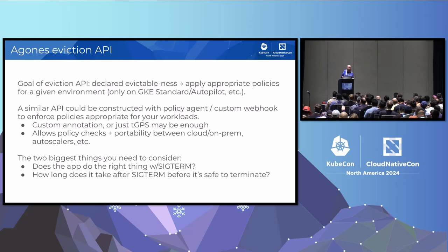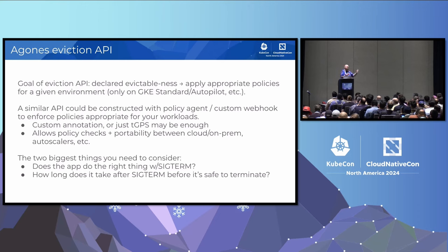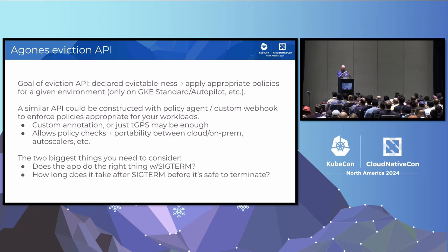If you want to do this on your own workloads, you could do something similar with a policy agent or a custom webhook to enforce policies appropriate for your workloads. If your workloads all support SIGTERM — modern or cloud-native apps that know SIGTERM means clean up now — you could use the termination grace period seconds as an indicator: if TGPS is this value, follow this set of steps. You can also ensure those workloads are scheduled onto node pools where cluster autoscaler and upgrades are appropriately configured. It's kind of a disservice that cluster autoscaler violates the TGPS setting by default.